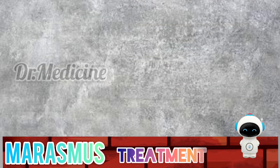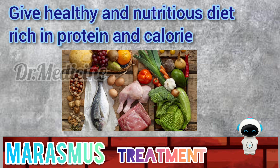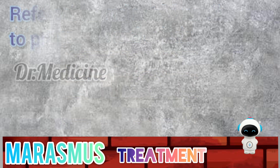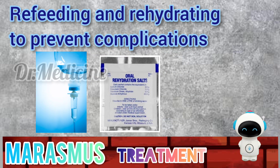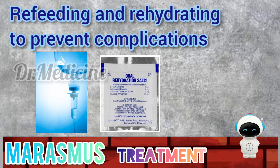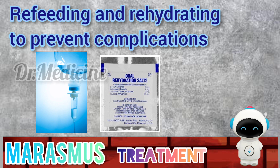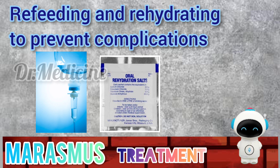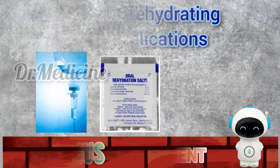Treatment of marasmus: The best way to treat marasmus is to give the affected individual a healthy diet rich in protein and calories. There are specific methods of refeeding and rehydrating the affected individual to prevent complications. The methods generally used for refeeding are use of intravenous fluids, rehydration solutions administered orally, and feeding through NG tubes.